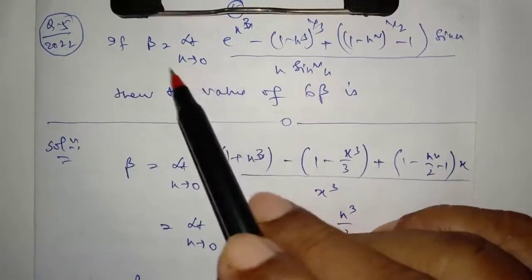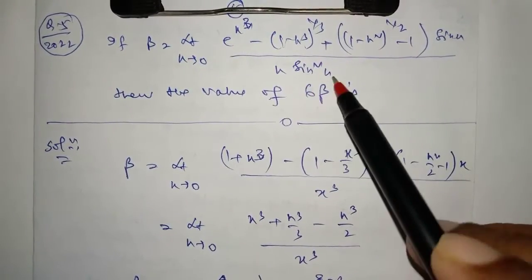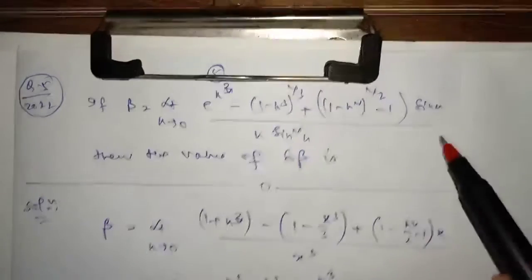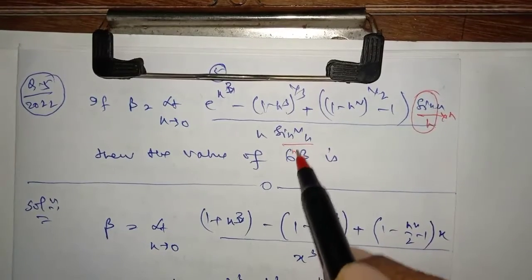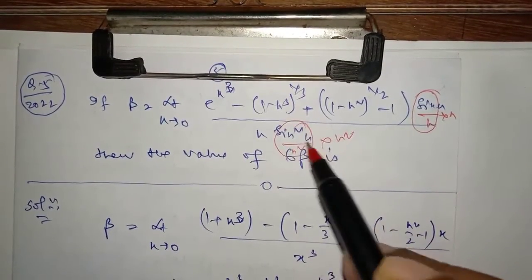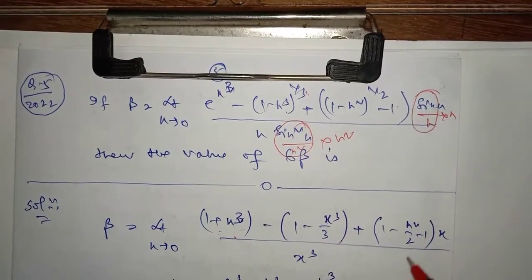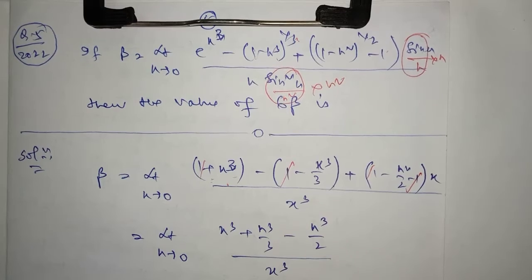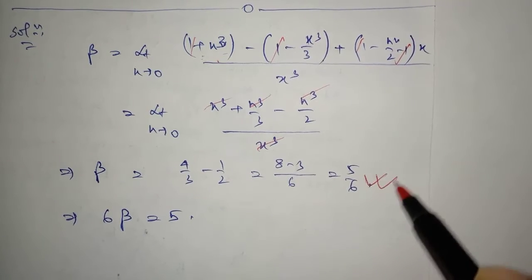Question 5: β = lim(x→0) [e^(x³) − (expression)] · (sin x / x) · (1/x²). The limiting value of sin x/x is 1, and x² · x² → 1. Expanding e^(x³) using Taylor series as 1 + x³ + ..., and applying binomial theorem, terms cancel. We get β = 4/3 − 1/2 = 5/6. Therefore 6β = 5.